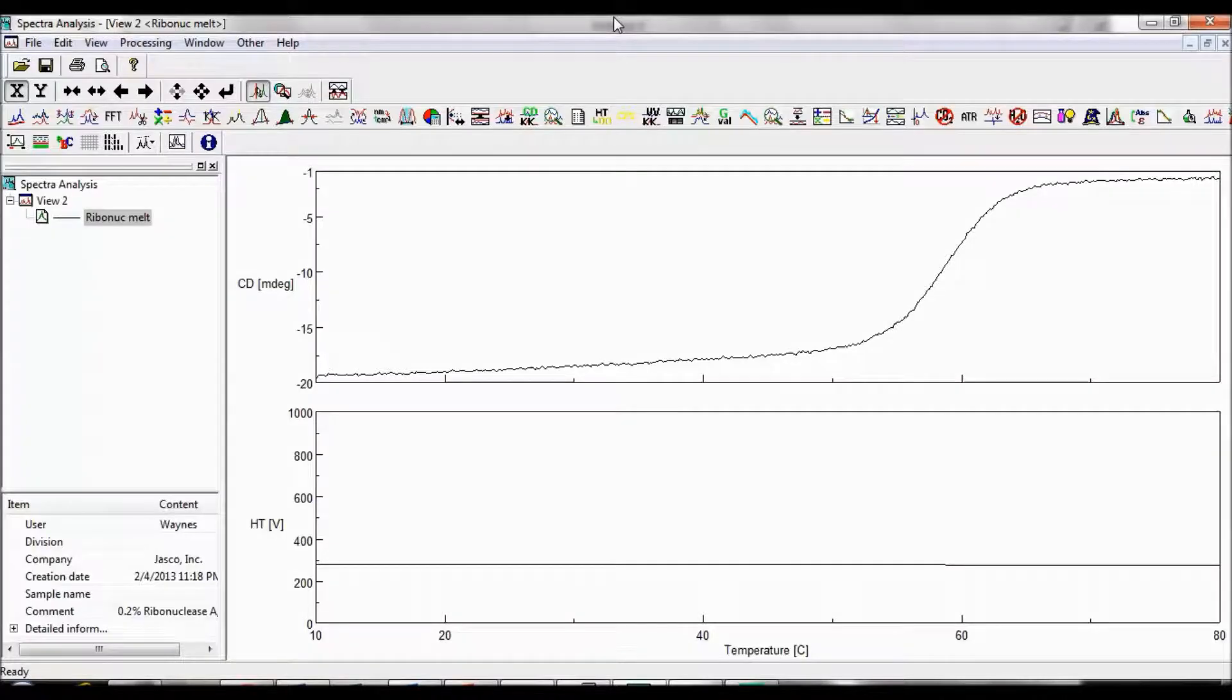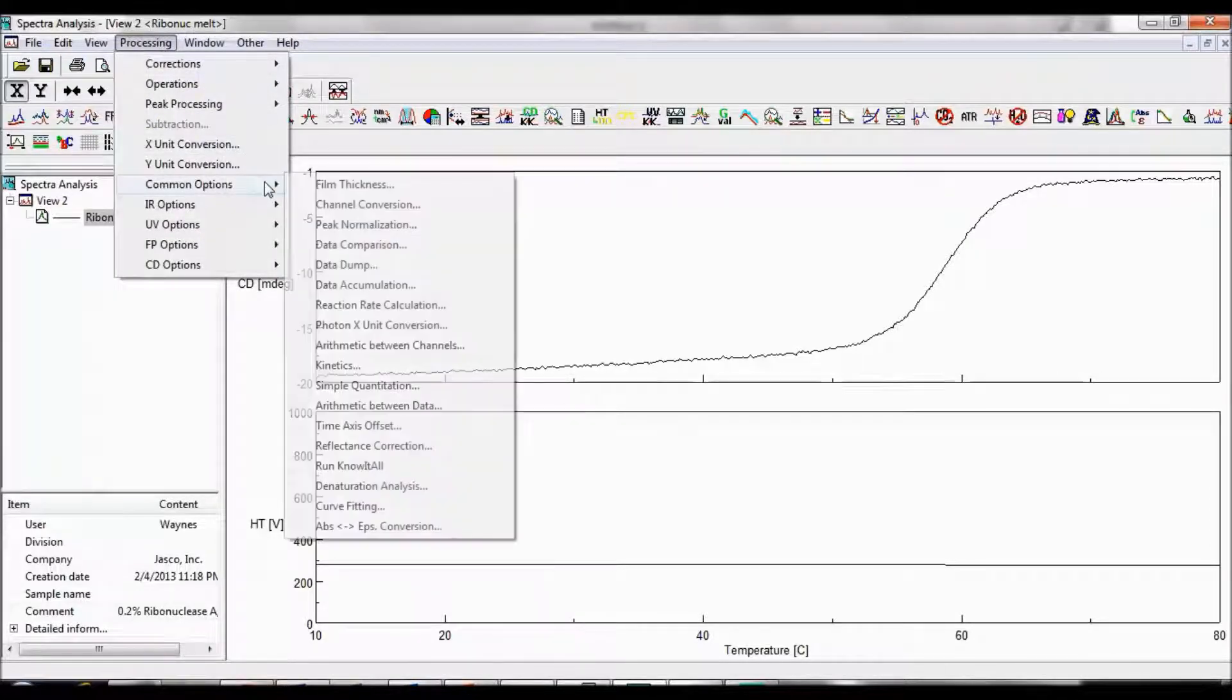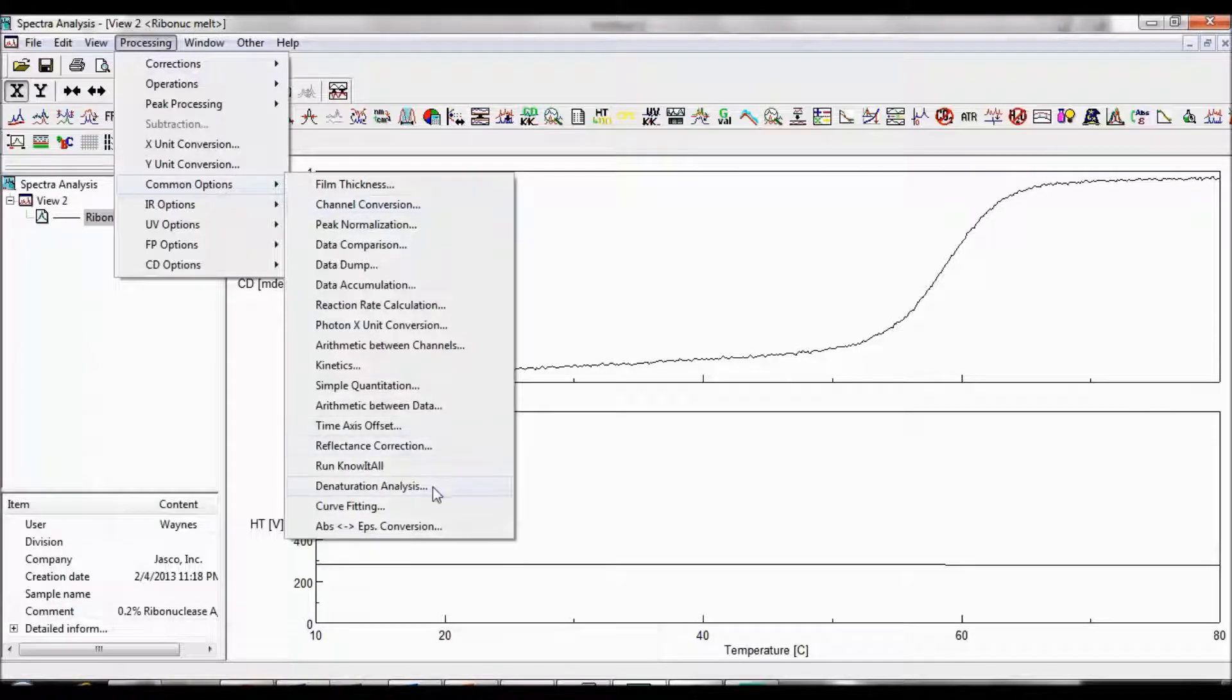Before starting the thermal denaturation analysis, make sure that the file you have opened is CD plotted as a function of temperature. Now we can go to Processing, Common Options, Denaturation Analysis.